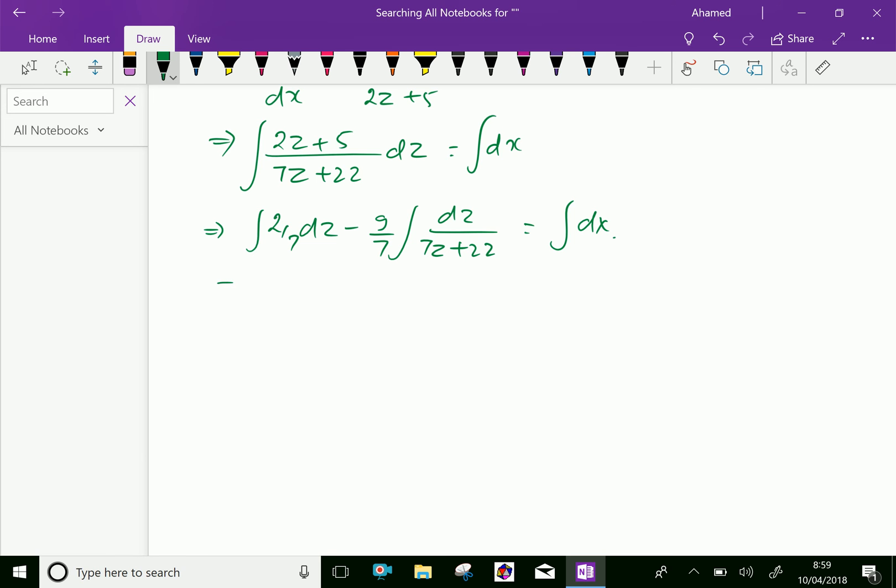By integrating, we will get (2/7)z minus (9/7) times (1/7) log of (7z + 22) equals integral dx. That is (2/7)z minus (9/49) integral of dz/(7z + 22) equals x + c.